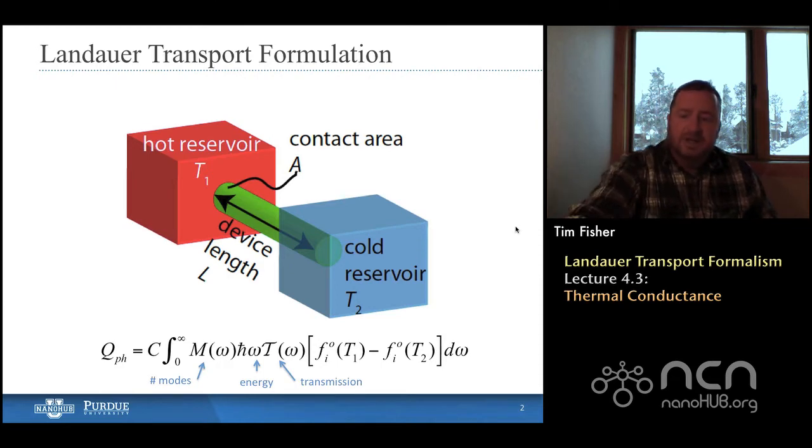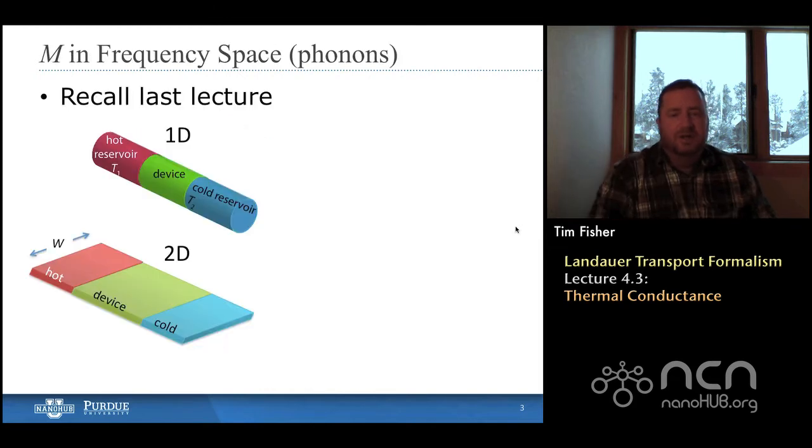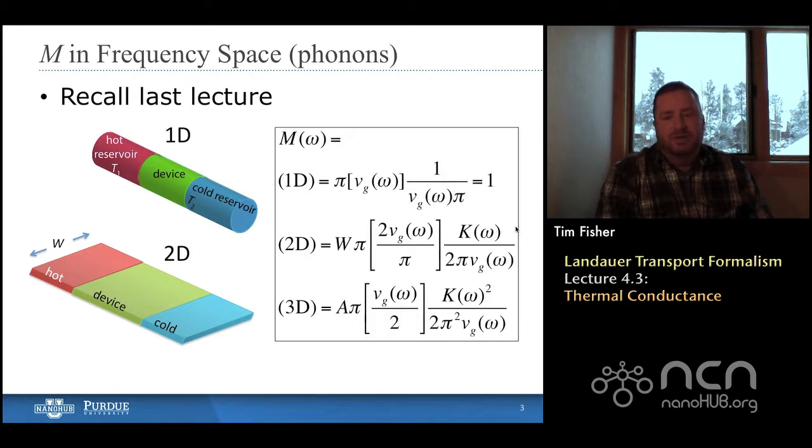Now the last time, in the previous lecture, we talked about the number of modes, and we started out with 1D and 2D systems, and we calculated this thing called the number of modes, and that was an integral part to the expression for heat flow rate Q and heat flux. And so if we break it down by dimensions in 1D, 2D, and 3D,